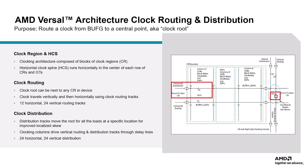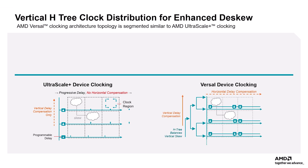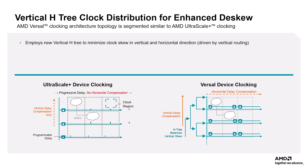This distribution scheme moves the route for all loads to a specific location for improved and localized skew. There are 24 global clocks per region in Versal architecture, just like UltraScale, and clock utilization reports provide details on design resource usage. The clocking columns provide interconnects between HCS routing and distribution, driving 24 vertical routing and 24 distribution tracks through balanced delay lines for local skew. The Versal clocking topology is segmented similar to UltraScale+ devices, but Versal also employs a new concept of a vertical H-tree to minimize clock skew in both vertical and horizontal directions.